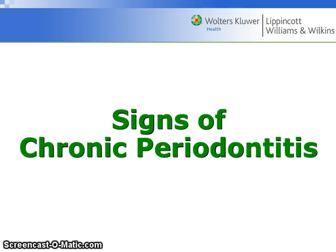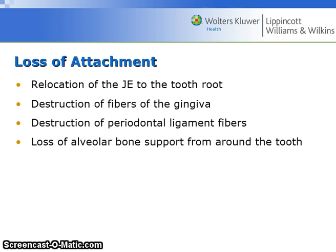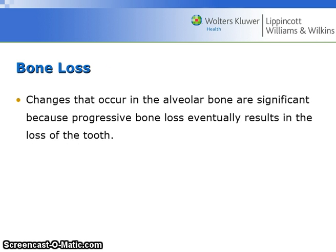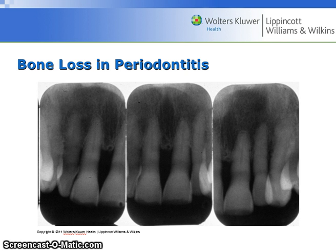Signs of chronic periodontitis include loss of attachment, relocation of the junctional epithelium to the tooth root, destruction of fibers of the gingiva, destruction of the PDL, and loss of alveolar bone support from around the tooth. Changes in alveolar bone are significant because progressive bone loss eventually results in loss of the tooth. See page 256, box 15.1 for characteristics of chronic periodontitis.